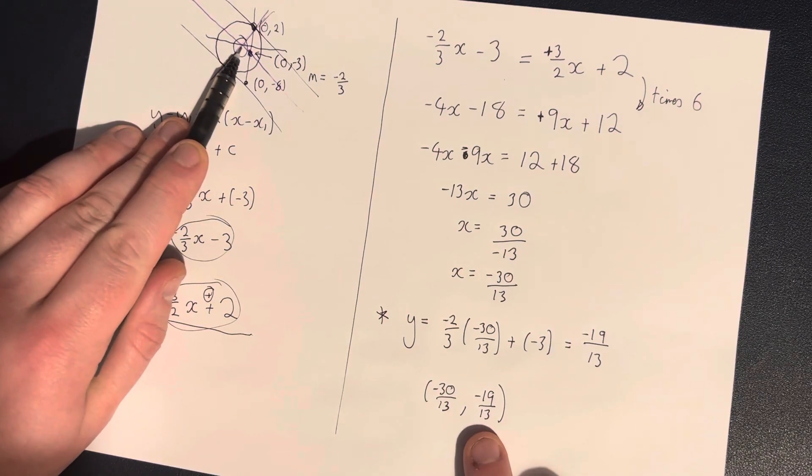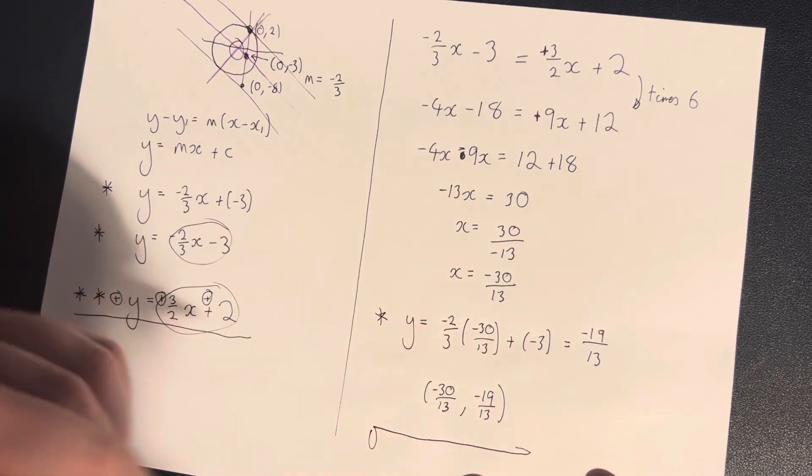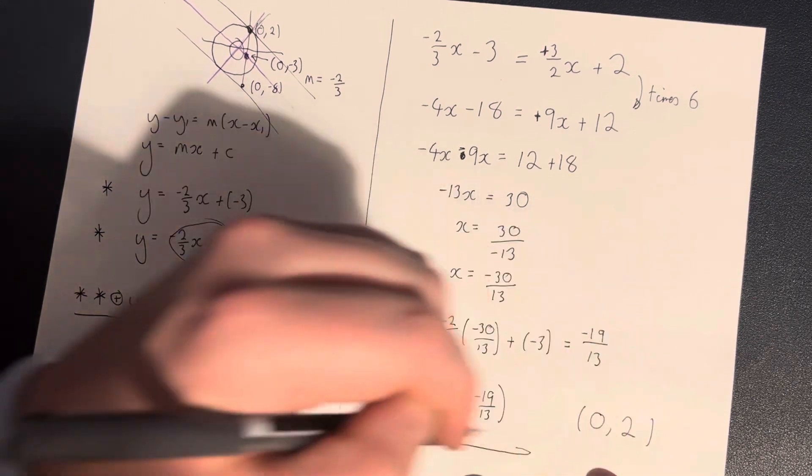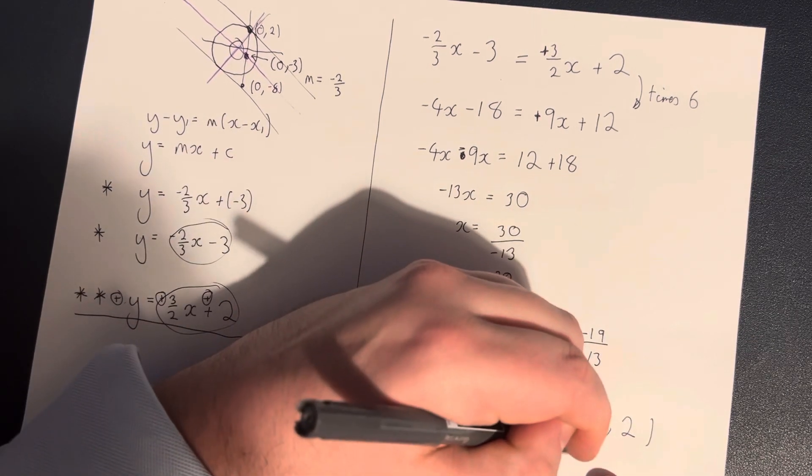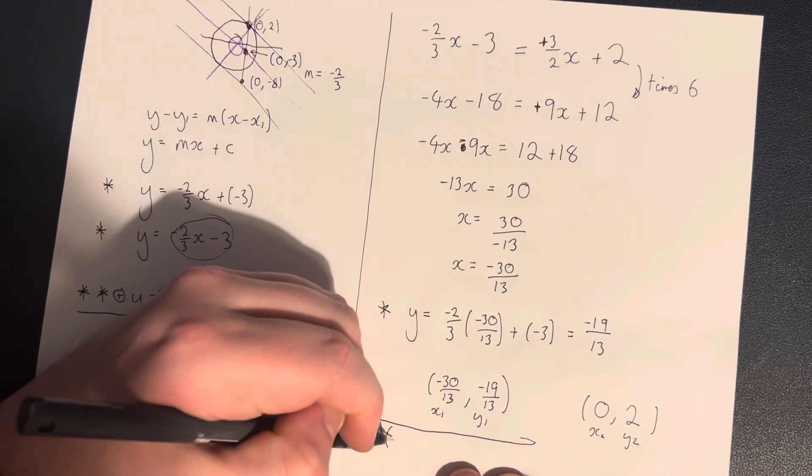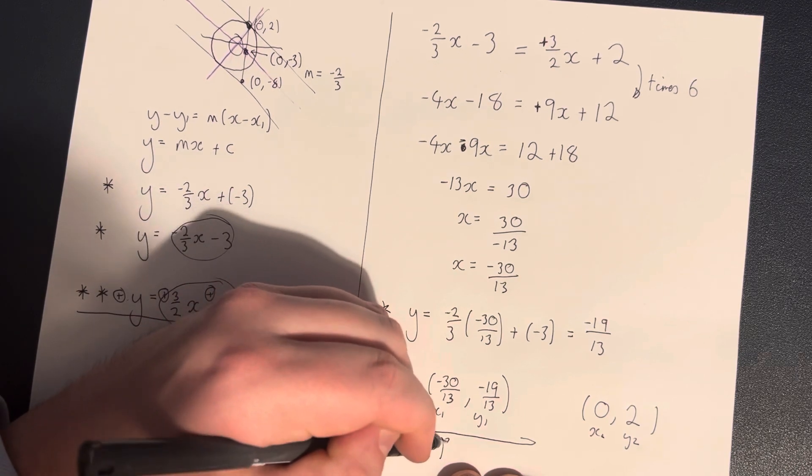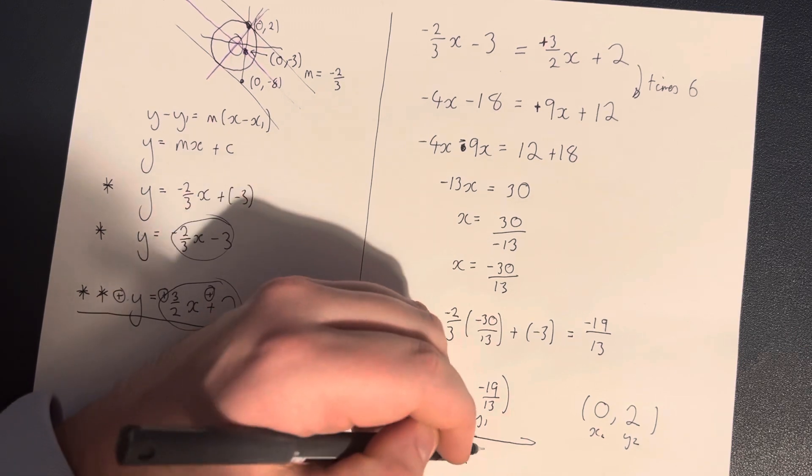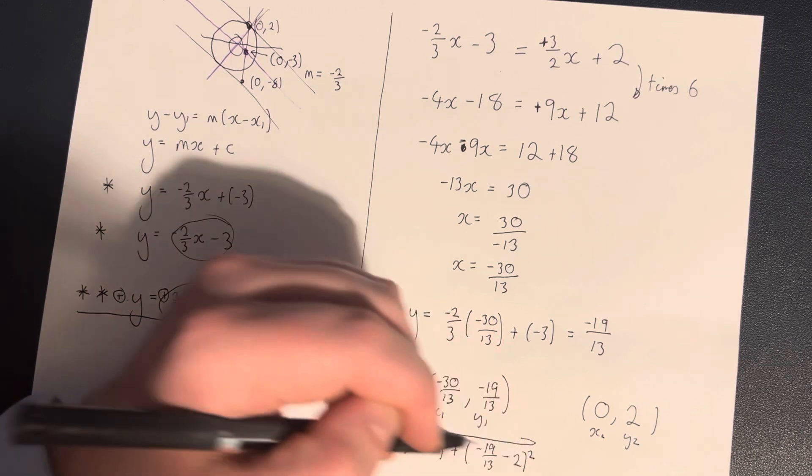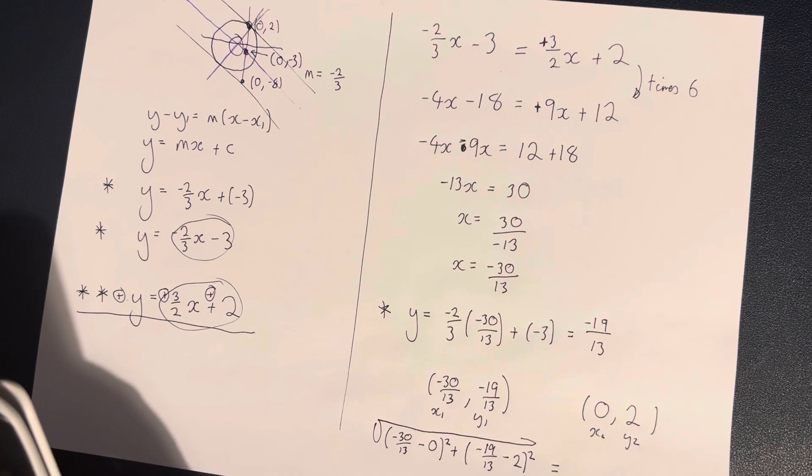So we now need to work out the distance from there to there. We can do that using our formula for length. So we can go with, from 0, 2, and let's call that x1, y1, x2, y2. So I can now go with minus 30 over 13, minus 0 squared, plus minus 19 over 13, minus 2 squared.